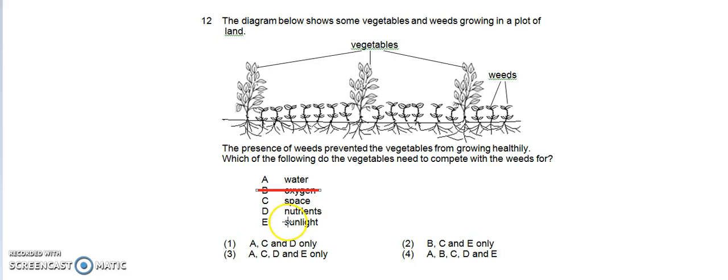E, Sunlight. There is no competition for sunlight as the vegetables are basically taller than the weeds. So the leaves of the vegetables are not being blocked by the sunlight. I mean, not being blocked from the weeds or by the weeds from the sunlight. So sunlight is not something they compete with.